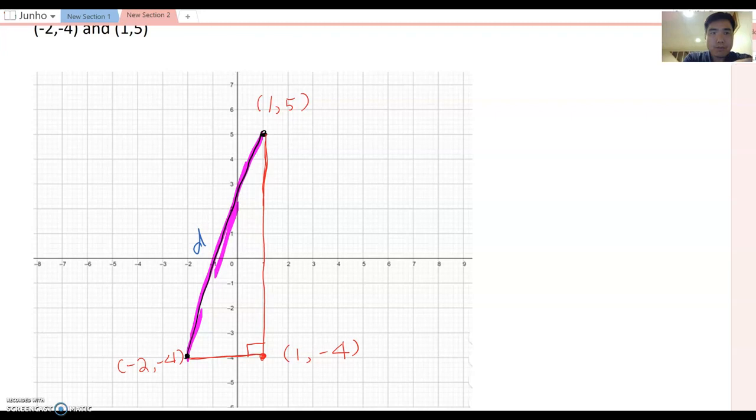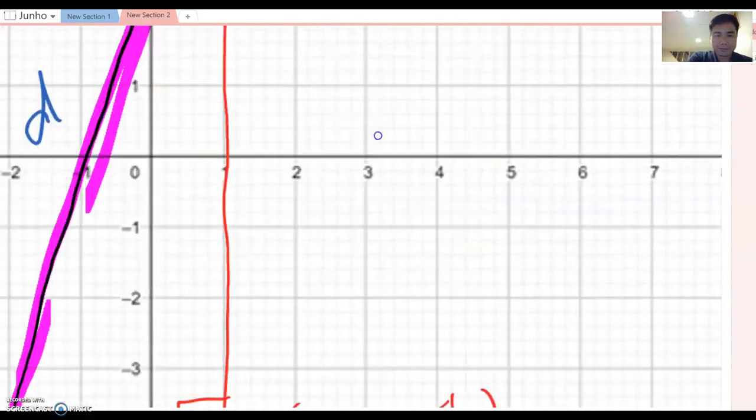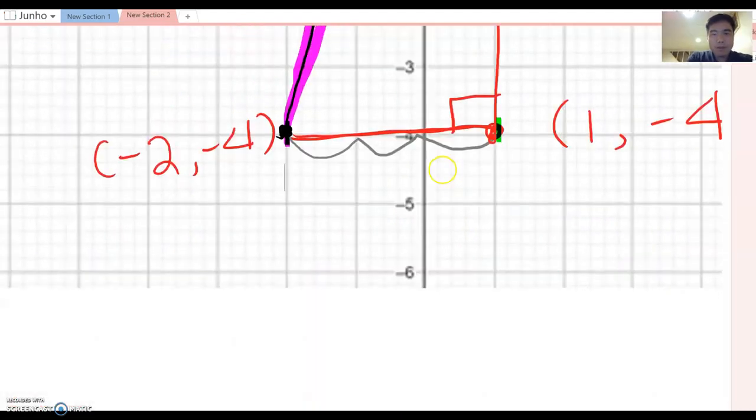So from this point to this point, what's the measurement here? As you see, we can make one, two, three units. But look carefully here. When we make three units, we're making it from -2 and then we reach 1 here. Therefore, we have the difference between two x values here. So that is called delta x. Okay.